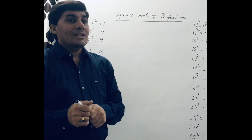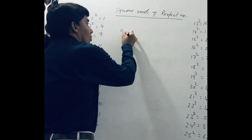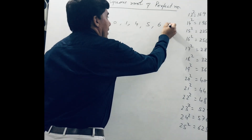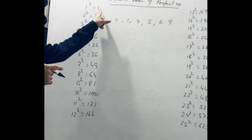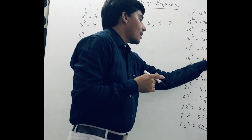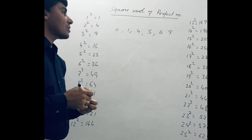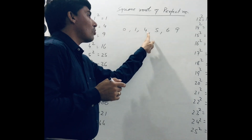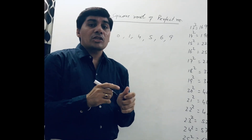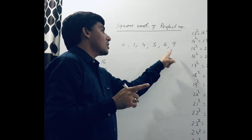In these squares, we see that the unit digit of all these square numbers is either 0, 1, 4, 5, 6, or 9. That means in every perfect square number, the unit place is always 0, 1, 4, 5, 6, or 9.